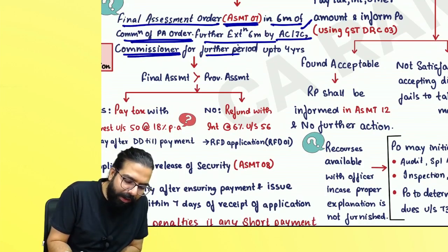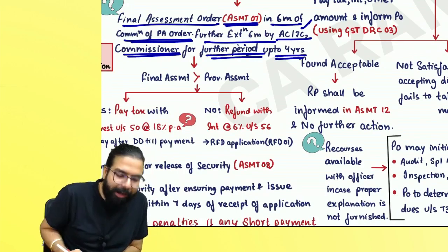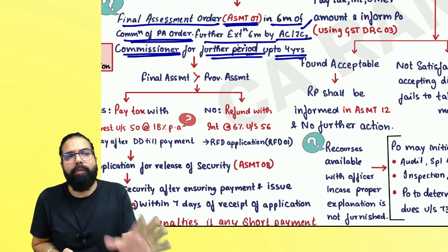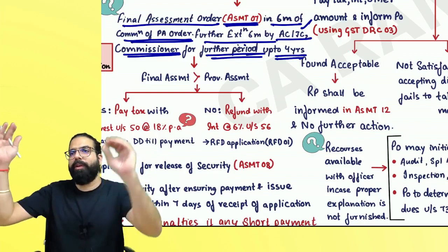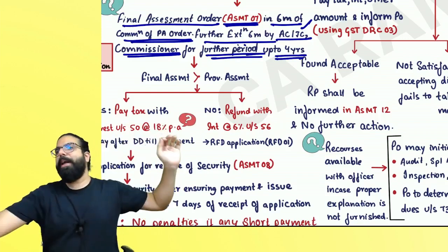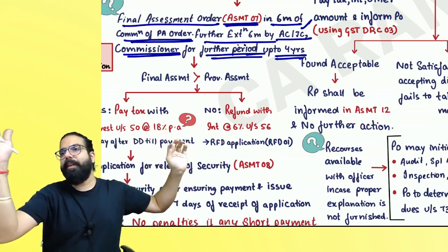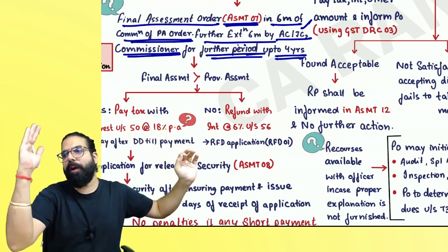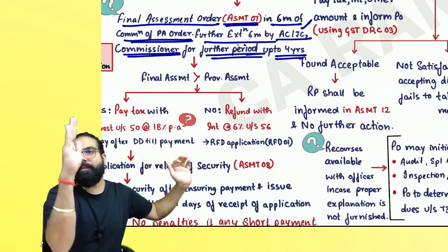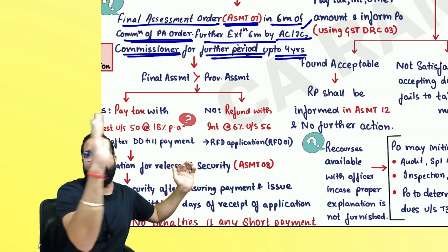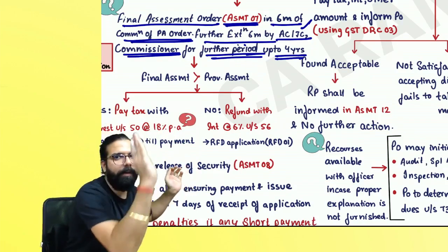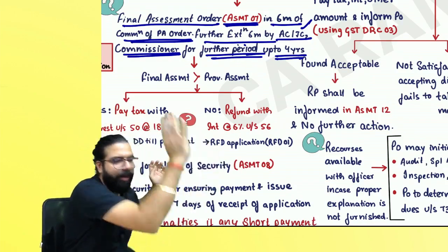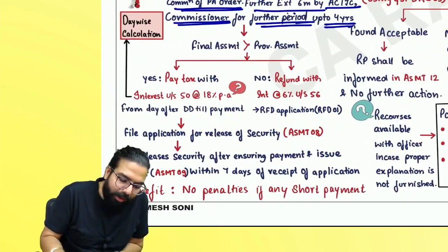Remember, the Commissioner can further extend the period by four years. So after applying, the provisional assessment order is communicated; from that date, six months — further extendable by six months, and further extendable by four years.